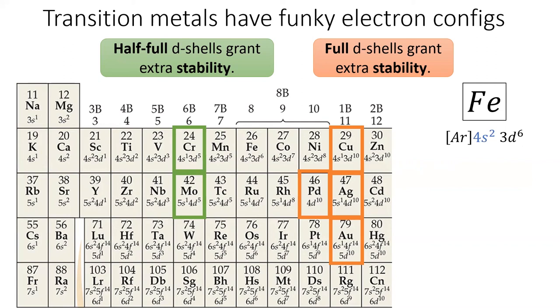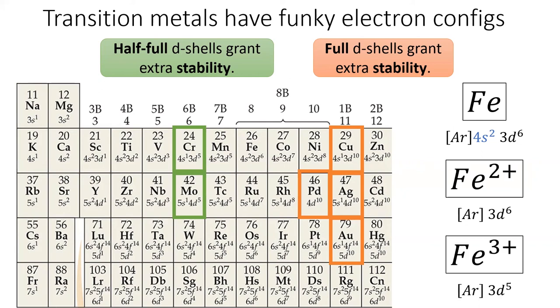This also explains why transition metals can have multiple oxidation states. Take iron, for example. We would conventionally think of iron as having two valence electrons, which I've highlighted in blue. So, iron forms a 2 plus ion regularly when it loses those two s electrons. But iron also forms a 3 plus ion when it loses a 3d electron, giving it a half full d shell.